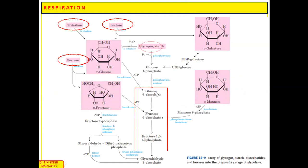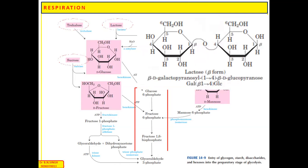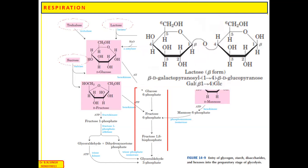The disaccharides like lactose, trehalose, and sucrose also enter glycolysis in the form of different intermediates. Lactose is a disaccharide consisting of galactose and glucose, formed by beta-1,4-glycosidic bonding. After breaking down of lactose, it produces galactose and glucose. Lactase breaks down lactose into glucose and galactose, and galactose enters glycolysis via UDP-galactose and glucose.